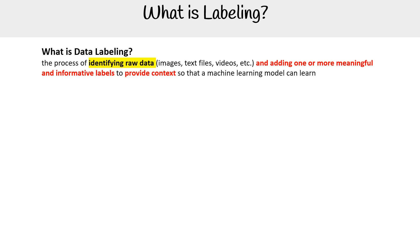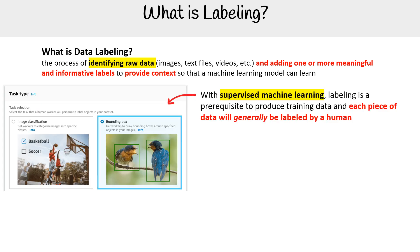Let's talk about data labeling. This is the process of identifying raw data — so images, text files, videos — and adding one or more meaningful and informative labels to provide context so a machine learning model can learn. With supervised machine learning, labeling is a prerequisite to produce training data.